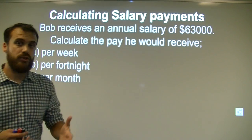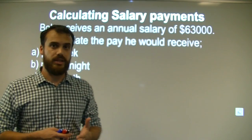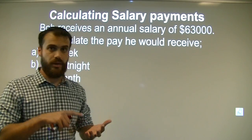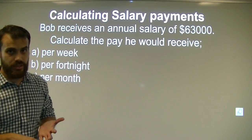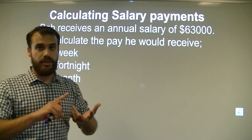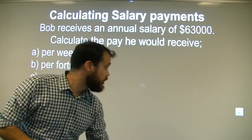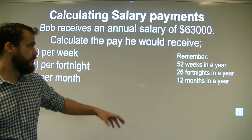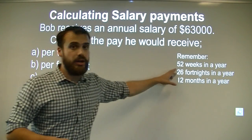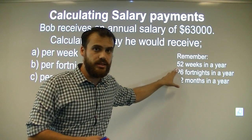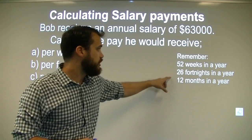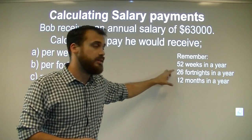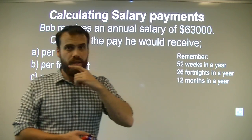In order to calculate this, you're going to have to know how many weeks are in a year, how many fortnights are in a year, and how many months are in a year. There are 52 weeks in a year, there are 26 fortnights in a year, and there are 12 months in a year.